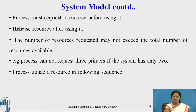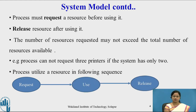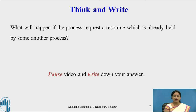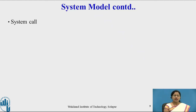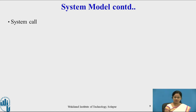A process utilizes a resource in the following sequence: first it requests the resource, then it uses it, then it releases it. If a process requests a resource already held by another process, it will enter the waiting state. To request and release a resource, processes must use system calls.